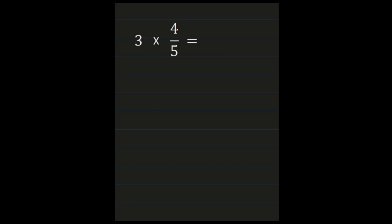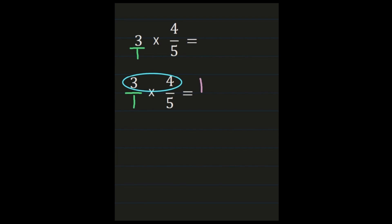For our next example we have 3 times 4/5. We need to multiply numerators and multiply denominators, which means that whole number needs to be in fraction form. To turn a whole number into a fraction, we put it over 1. Rewrite the problem so numerators are lined up and denominators are lined up. Our numerators are 3 and 4; 3 times 4 is 12. Then multiply denominators: 1 times 5 is 5.